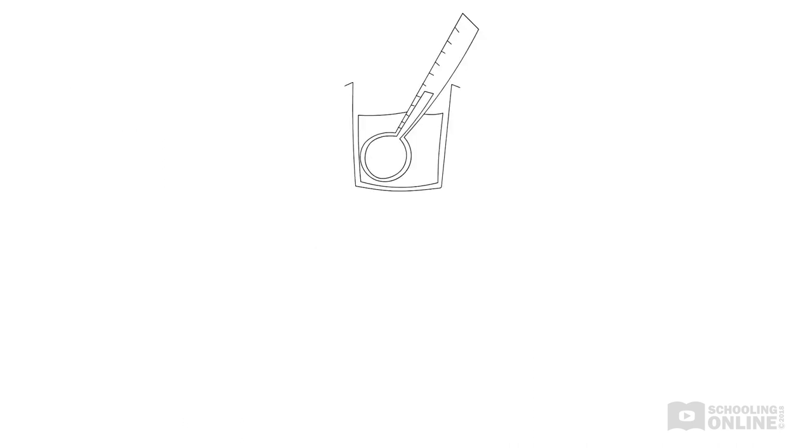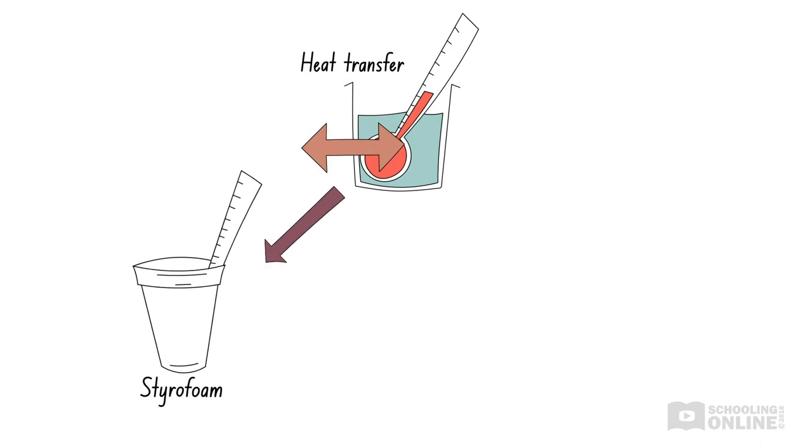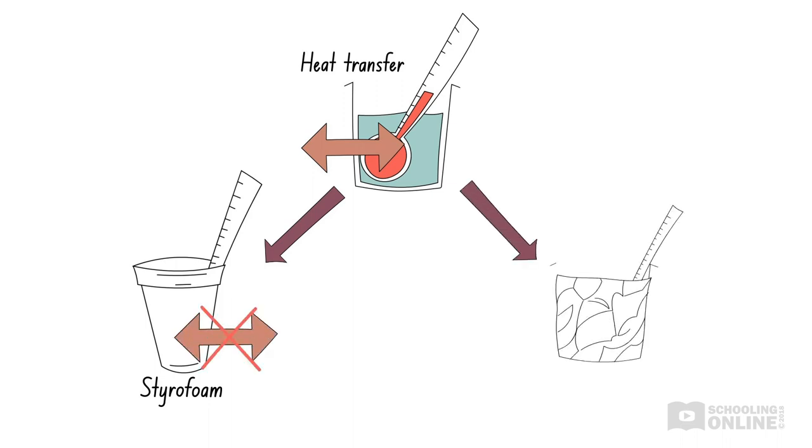To avoid this problem, we can try to minimise the heat exchanged between our experiment and the environment. For example, we can perform experiments inside a styrofoam cup, which is a good insulator, or wrap aluminium foil around a beaker, which helps reflect heat.